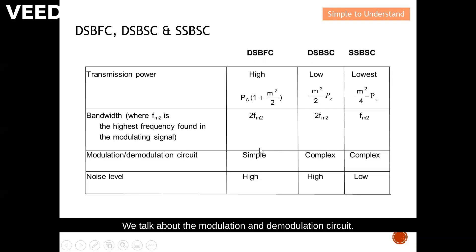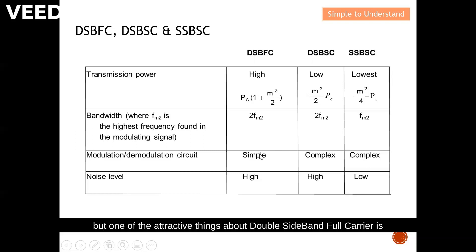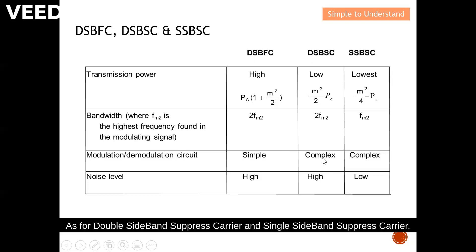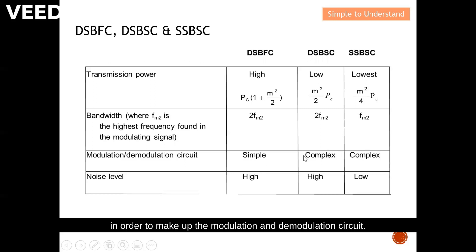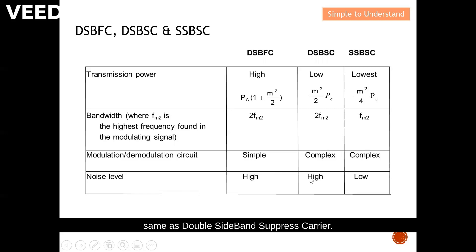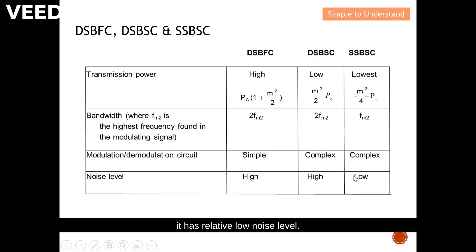Regarding modulation and demodulation circuits: DSB-FC uses larger power but has a simpler circuit for both modulation and demodulation, which is an attractive feature. DSB-SC and SSB-SC circuits are more complex and require more components. For noise level, DSB-FC and DSB-SC both have high noise levels, while the attractive part of SSB-SC is its relatively low noise level.